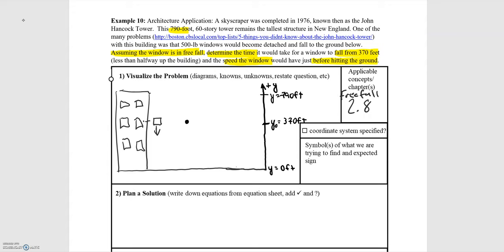On the motion diagram we expect the spacing of the dots to increase as we move further down in position. We can now label the information on our motion diagram. The initial position of the window is equal to 370 feet, and the initial velocity — since we assume it starts from rest — is zero meters per second.